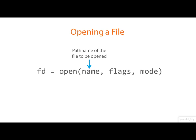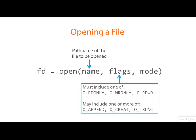We begin by opening a file. The first argument to open is a string — the relative or absolute path name of the file we want to open. The second argument, the flags argument, specifies whether we want to open the file for reading, for writing, or both. There are additional flags to say whether we want to append to the file, to create it if it doesn't exist, or to truncate it down to zero length if it does exist.